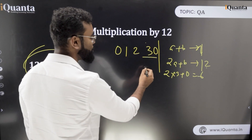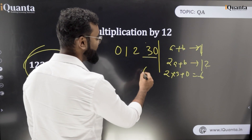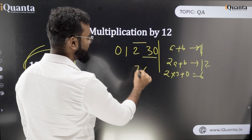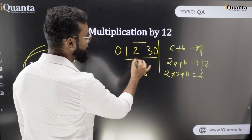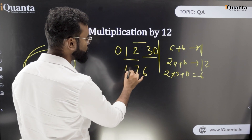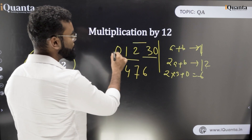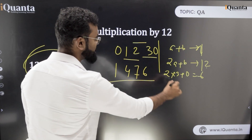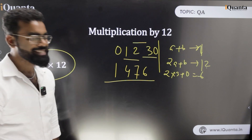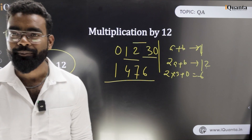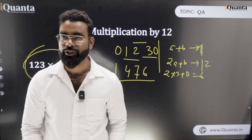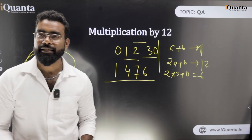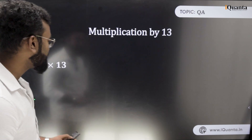So: 2 into 3 plus 0 is 6; next 2 into 2 plus 3 is 7; next 2 into 1 plus 2 is 4; next 2 into 0 plus 1 is 1. Your answer is 1476.